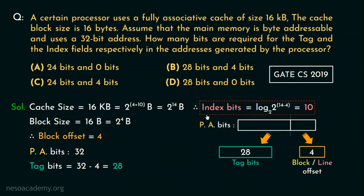Hence the index bits are not really required and for the tag we require 28 bits. Therefore option D, where for tag 28 bits has been given and for index 0 bits are specified, will be the correct choice for this question.